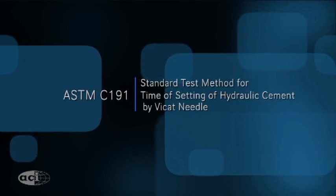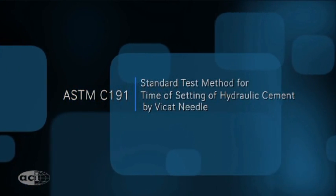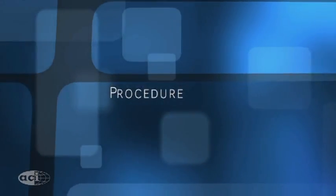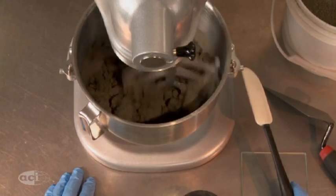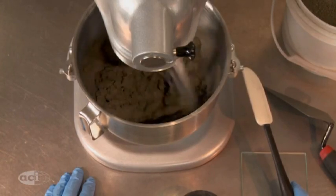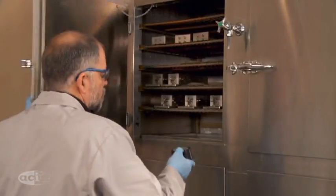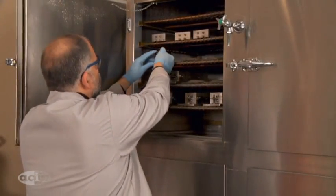ASTM C191, Time of Setting by Vicat Needle. Procedure. Paste mixed to normal consistency as described in test method ASTM C187 is stored and maintained in a moist cabinet during the setting test.